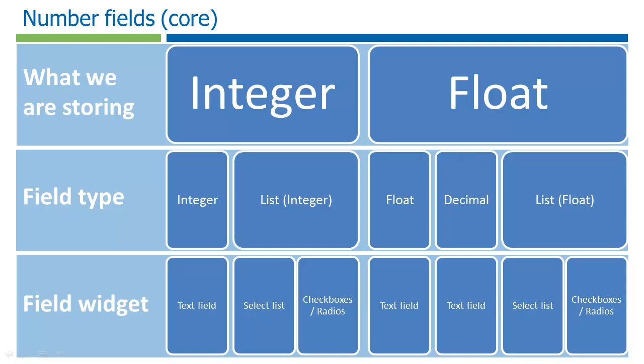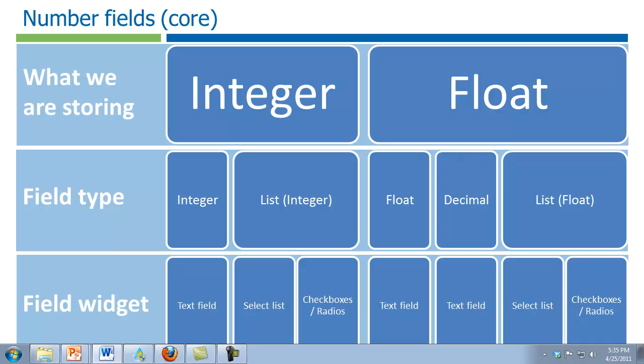Use floats or decimals for freeform input of a number that might have a decimal value. Floats are used whenever the decimal precision is unknown, such as the mileage of a run or a bike ride. People might want to enter in whole miles, tenth of a mile, quarter miles, or even use some other type of precision. Use decimals where the precision is fixed, such as a price in US dollars where the number of cents is fixed to two decimal points.